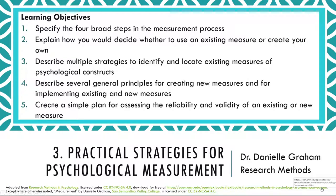Practical Strategies for Psychological Measurement. The learning objectives for this section are: 1. Specify the four broad steps in the measurement process. 2. Explain how you would decide whether to use an existing measure or create your own. 3. Describe multiple strategies to identify and locate existing measures of psychological constructs. 4. Describe several general principles for creating new measures and for implementing existing and new measures. 5. Create a simple plan for assessing the reliability and validity of an existing or new measure.